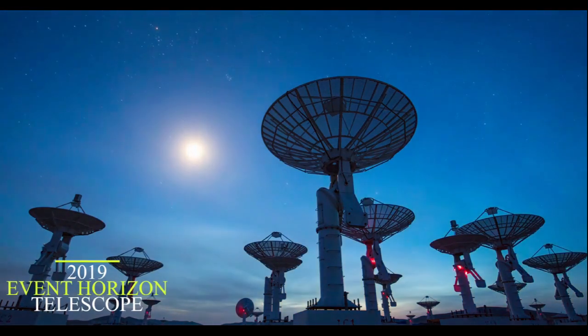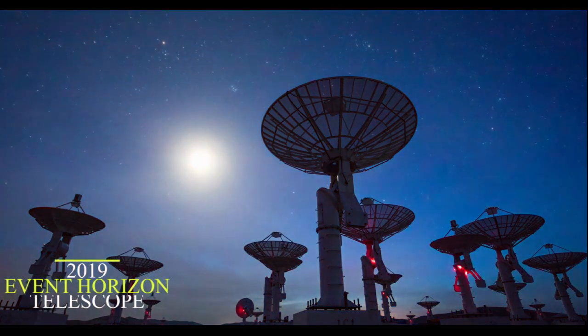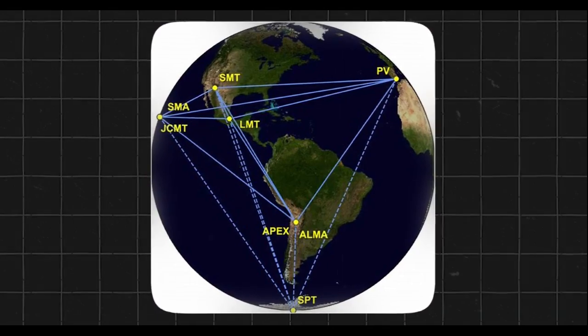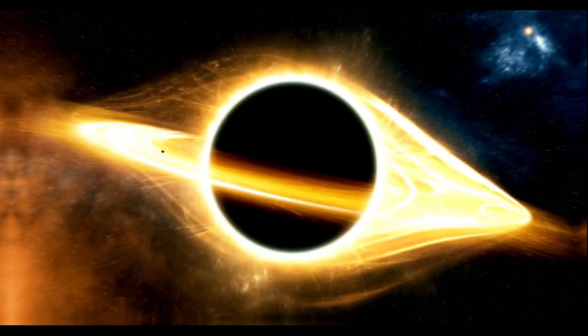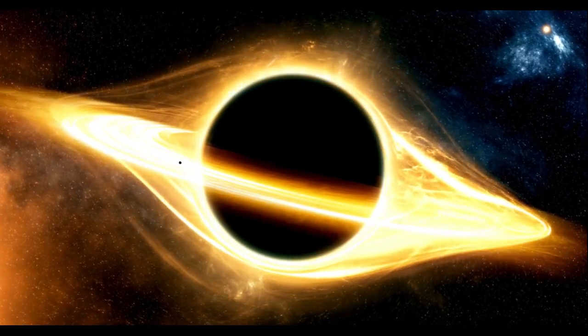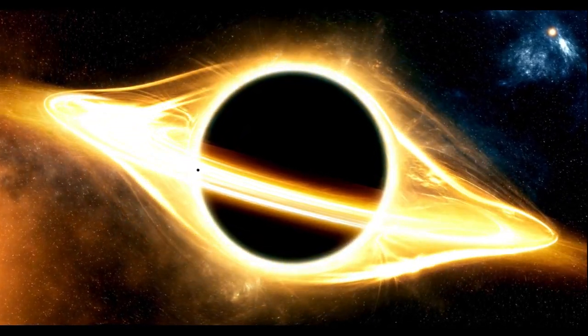But in 2019, the Event Horizon Telescope, a global network of radio telescopes acting as one, captured the first ever image of a black hole, revealing a fiery ring of hot gas swirling around SGRA's Event Horizon.